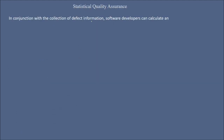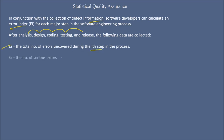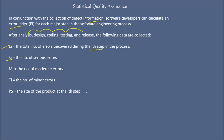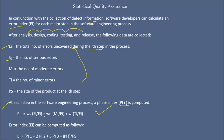Software developers can also calculate an EI (error index) for each major step in the software engineering process — after analysis, design, coding, testing, and release. The data collected includes: EI (total errors uncovered during the ith step), SI (number of serious errors), MA (number of moderate errors), TI (number of minor errors), and P (size of the product at the ith step). At each step, a phase index is calculated using a formula, and the error index is computed from these phase indices.